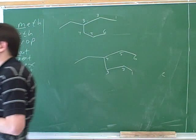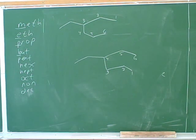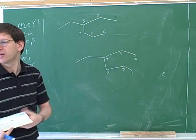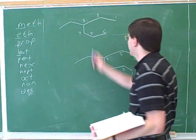So not only do you have to try multiple ways of getting the longest chain, but then there's always two different directions you could theoretically number the longest chain. You have to try both of them and ask which of those gives you the smallest number for the substituent. So we're going to stick with this.